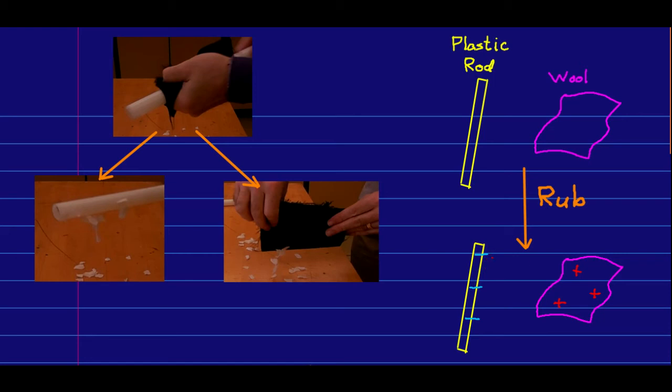The only thing to remember when you're looking at a charge diagram like this is that it is not suggesting that the plastic rod only has negative charge after being rubbed. What it's suggesting is that the plastic rod has surplus negative charge after being rubbed, and that may have been achieved by gaining negative charge from the wool or by giving positive charge to the wool.